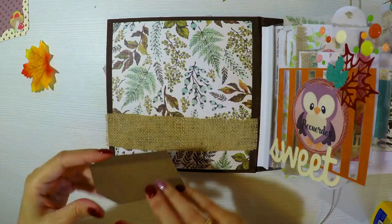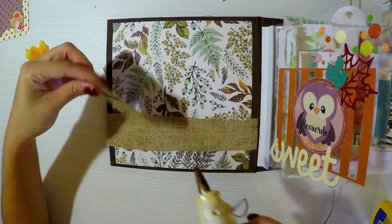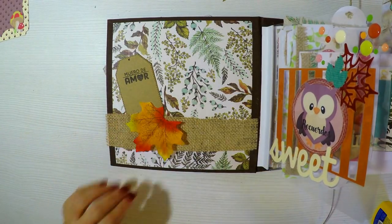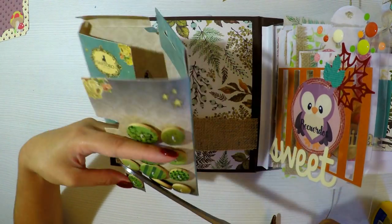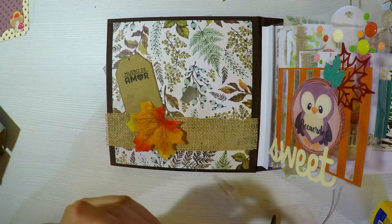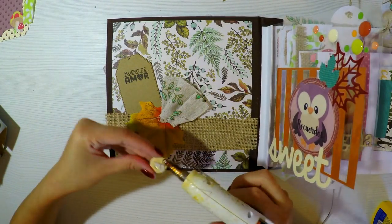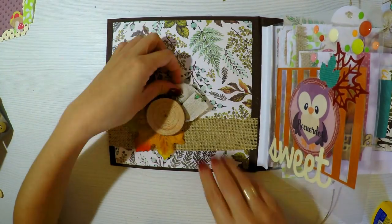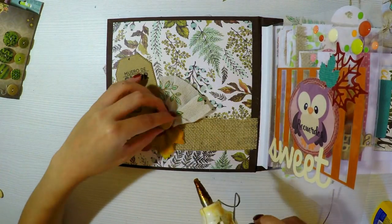Voy a hacer la parte de la contraportada que es muy sencillito, un tag con un sellito de muero de amor de Gigi et Moi y una hojita de otoño. Estas hojitas de otoño las compré en Aliexpress. Compré 100 hojitas por 2 euros creo y son súper bonitas. Las compré para la boda porque era un poco así estilo otoño y la puse en algunas cajitas. Y la verdad que me sobraron un montón de hojitas y eran muy baratitas. Así que dije nada, para el álbum de otoño va a quedar genial.